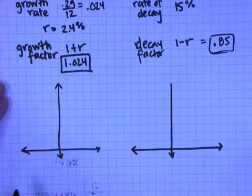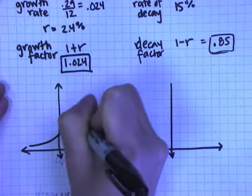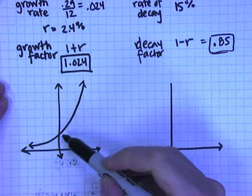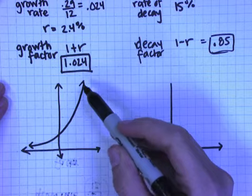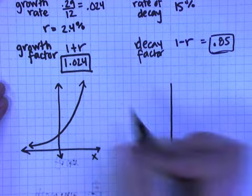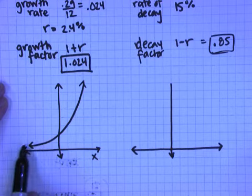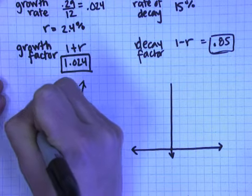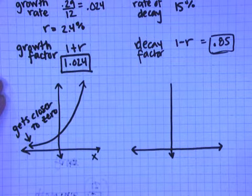So for growth, if we were to graph our equation for the credit card debt, you would see that in the positive direction, it would keep increasing more and more and more. It would be getting more steep as you were getting bigger on the x-axis. And then as you're going in the negative x directions, you would see that this is flattening out and getting closer and closer to 0.